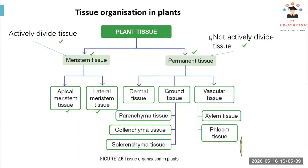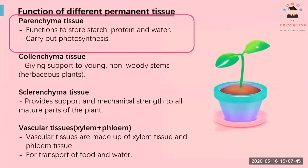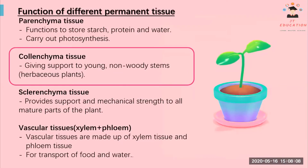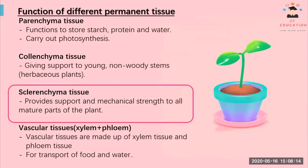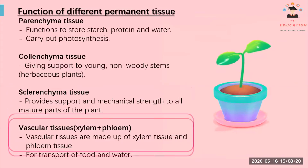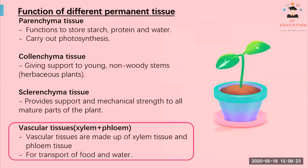Vascular tissue includes xylem and phloem. The function of parenchyma is to store starch, protein, and water, and also to carry out photosynthesis. Collenchyma tissue gives support to the non-woody stems of herbaceous plants. Sclerenchyma tissue also gives support and mechanical strength to all mature parts of the plant.